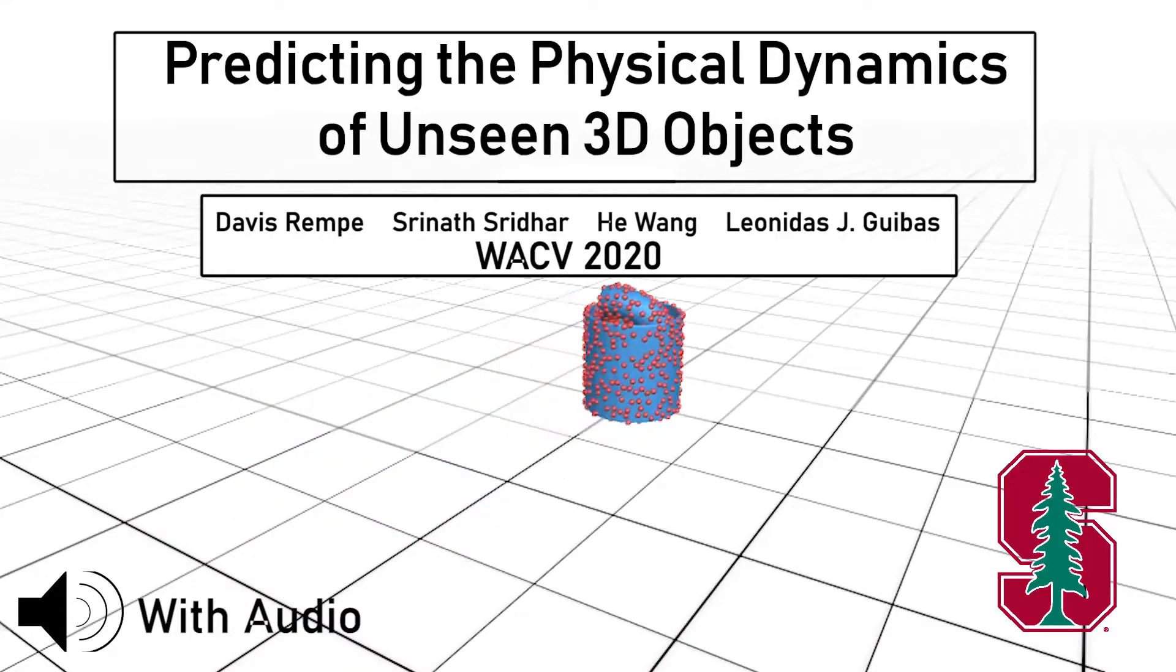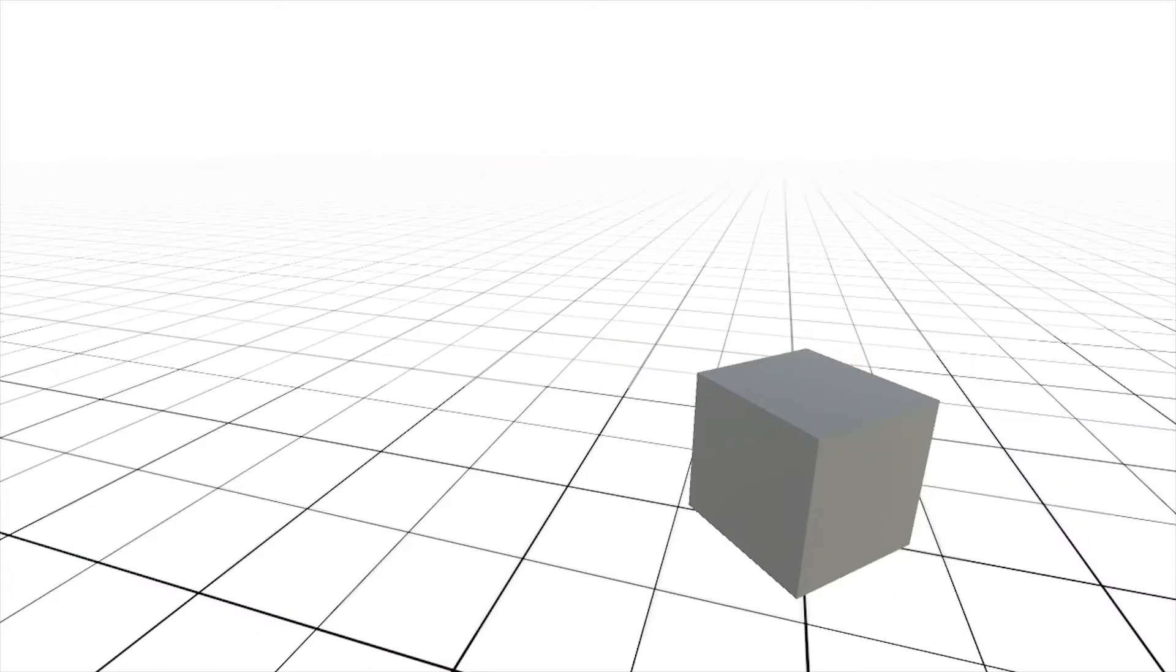Predicting the physical dynamics of unseen 3D objects. We investigate the problem of predicting the 3D dynamics of a rigid object moving along a plane which has just been subjected to an impulsive force.